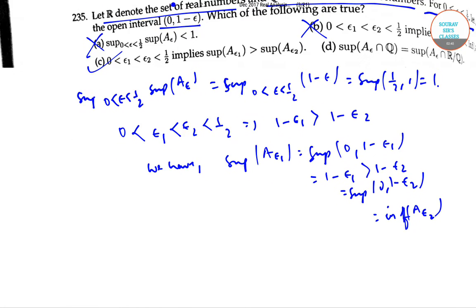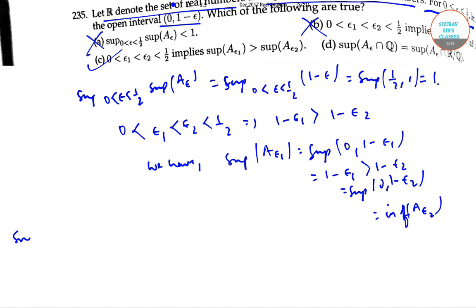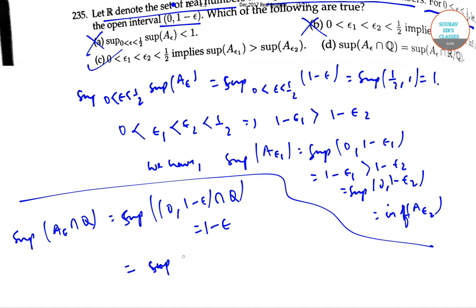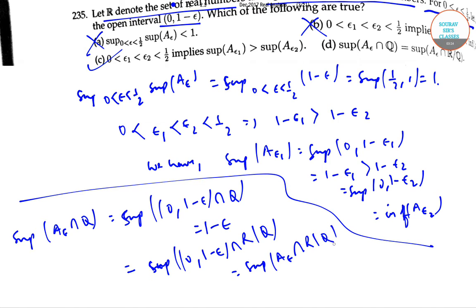For option D: the supremum of A_epsilon_1 compared to A_epsilon_2 — considering the intersection of (0, 1 minus epsilon) with R minus Q — the supremum is preserved, so option D is also correct.